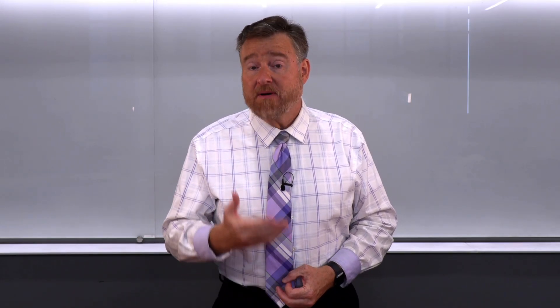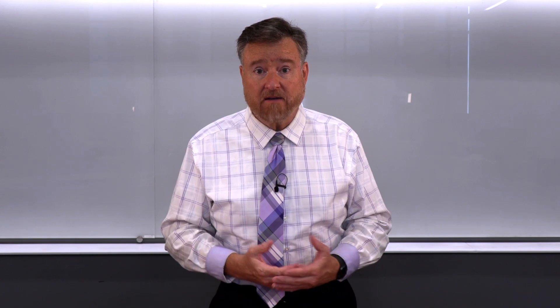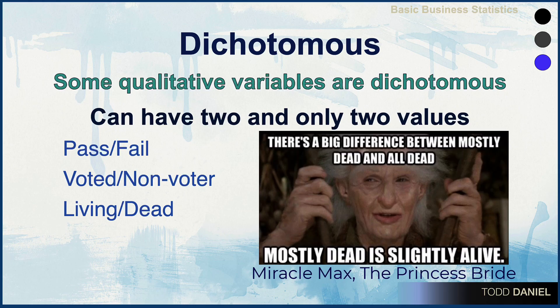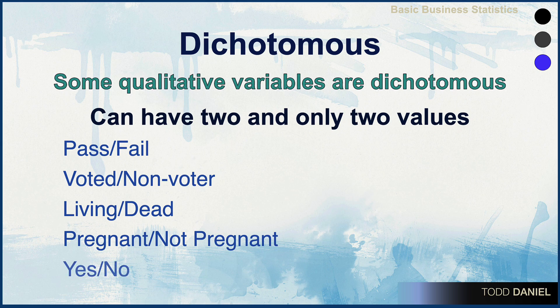There is a special type of categorical data called dichotomous data, which can take on two and only two values. You pass or you fail — you have to be in one group, not both and not neither. Did you vote in the last election — voter or non-voter? Are you alive or dead? Despite what you may have heard from The Princess Bride, there's no such thing as mostly dead. Pregnant or not pregnant. You have to be in one category; you can't be in both or neither. That is what makes this a dichotomous variable.